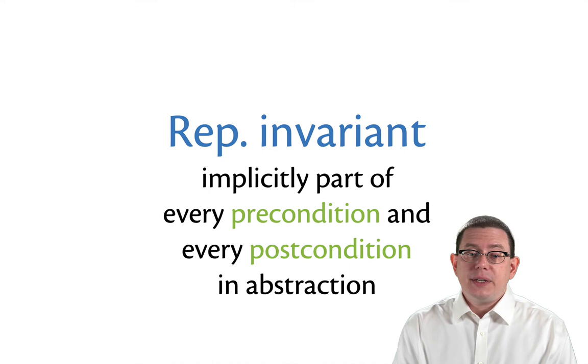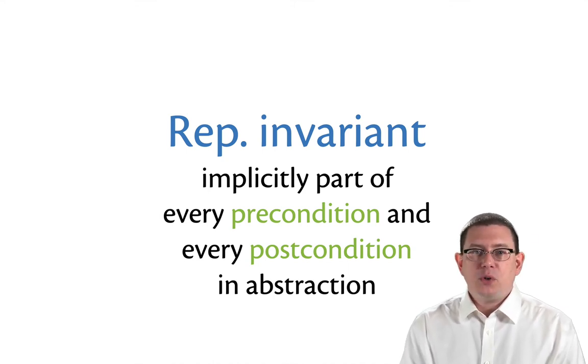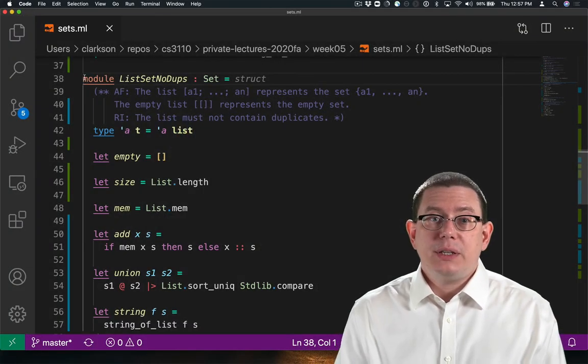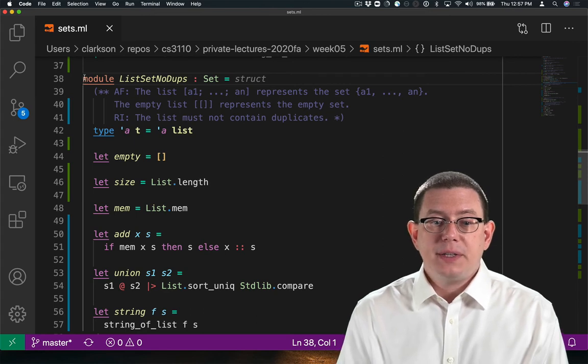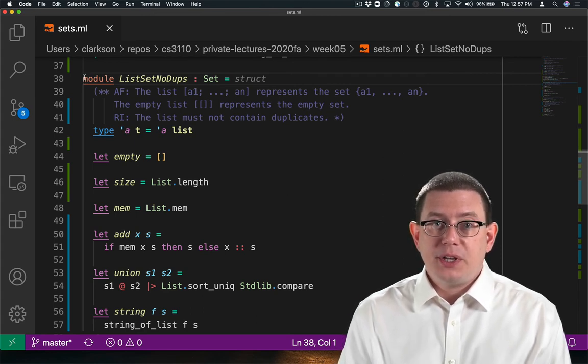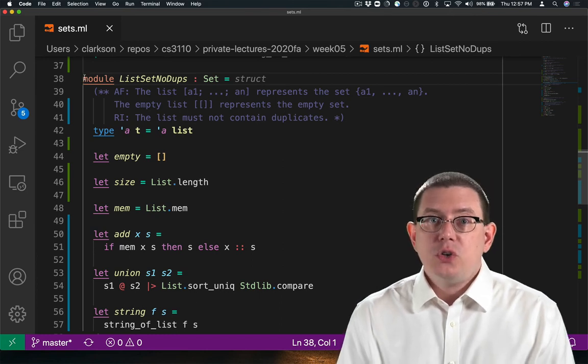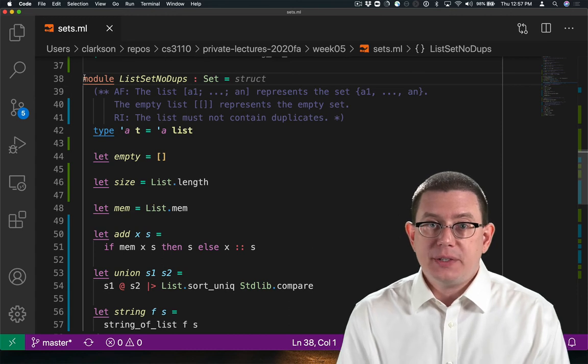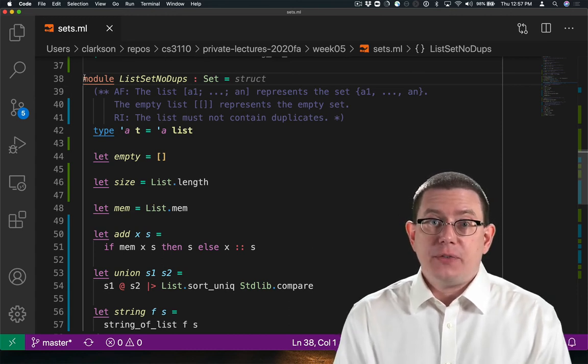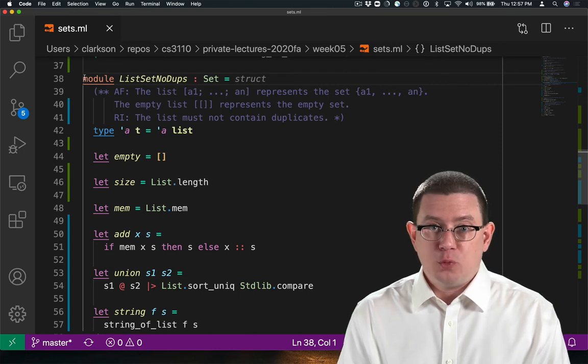The representation invariant is implicitly part of every precondition and postcondition in the abstraction. So every operation in list set no dupes implicitly has this rep invariant that the list must not contain duplicates as part of its precondition and part of its postcondition. No one is allowed to pass in a value that has duplicates, and no operation of this data structure is ever allowed to return a list that does have duplicates.